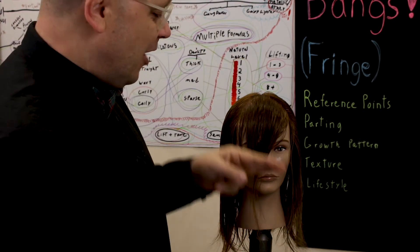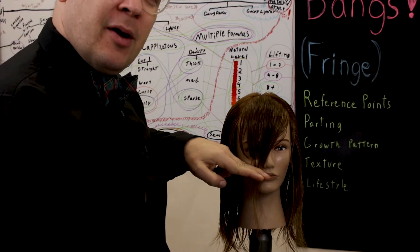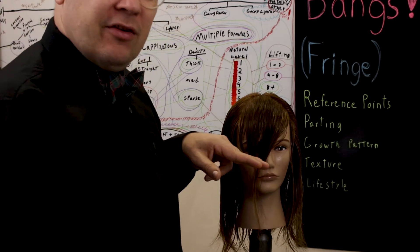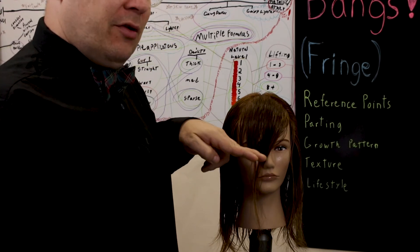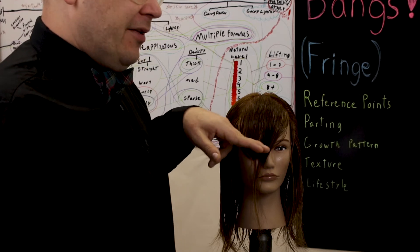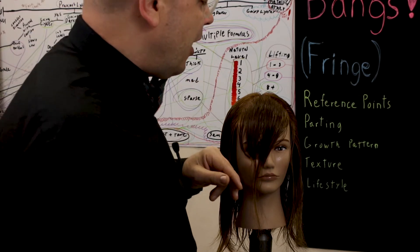So as with most bangs, I want to cut the hair as close to the body as possible. Because any elevation is going to cause some graduation or layering. And we want to try to minimize that, at least at first. So keep it close to the body.